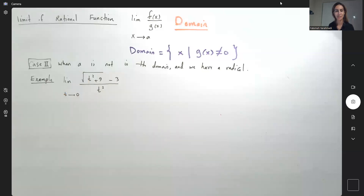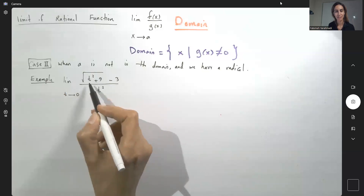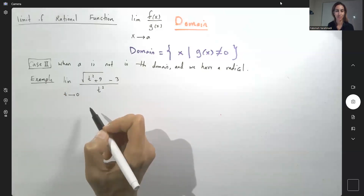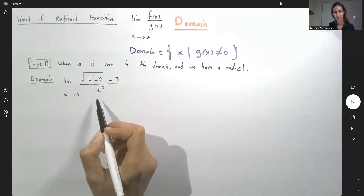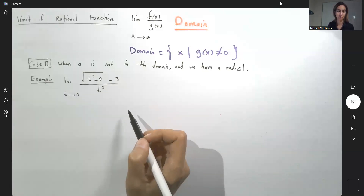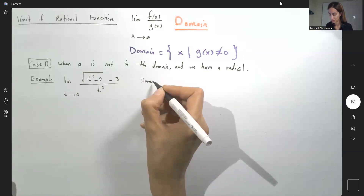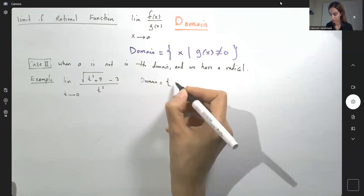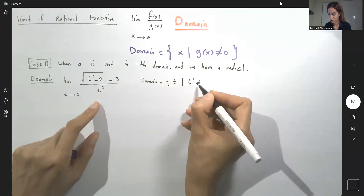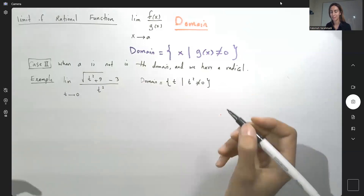So what is the domain here? The quantity inside the radical is always positive, so we are not worried about the radical. We only look at the denominator in this specific function. The domain is equal to all t values such that t squared is not zero, or basically t is not zero.